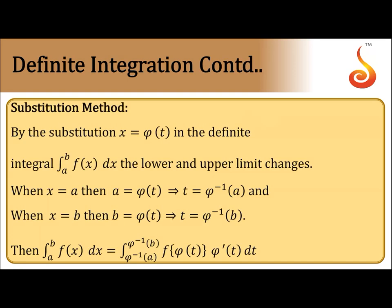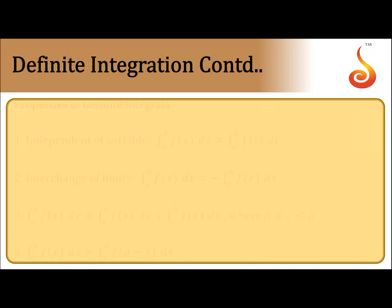For the substitution method in definite integrals: when you substitute x = φ(t), the limits also change. When x varies from a to b, t varies from φ⁻¹(a) to φ⁻¹(b), multiplied by φ'(t)dt.